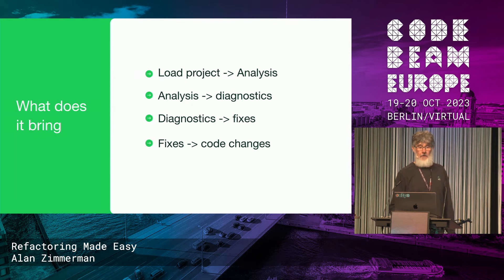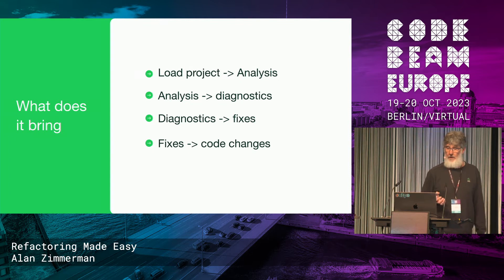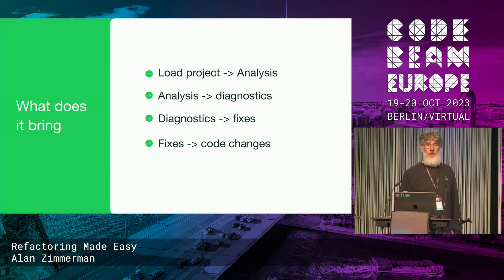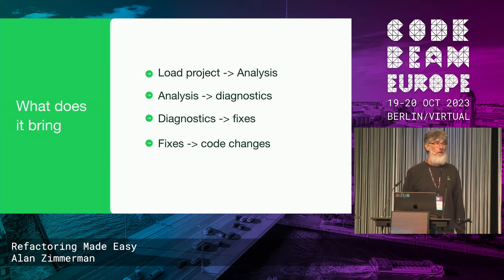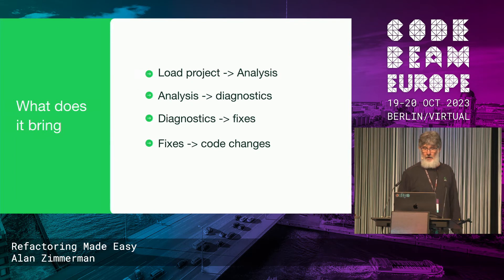So what does it bring? The first thing it does is solve the input and output problems we mentioned before. It can load an Erlang project, process all the files and dependencies, and generates an internal database of what it's seen. This database allows you to work at the equivalent of abstract forms but with macros expanded, and you can also traverse this representation at the pre-expanded level. The analysis happens with full expansion, but when you're working with the code to make changes, you obviously want to make a change at the surface level — you don't want to make a change deep in some macro in some include file. So changes happen at the surface level; a macro shows up as a function call.